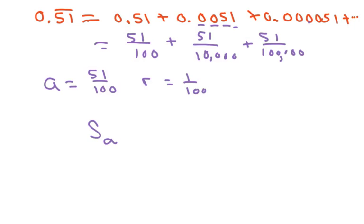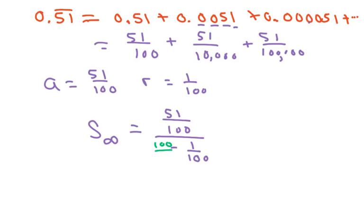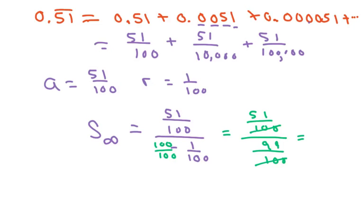Using the infinite geometric series summation formula, we get 51 over 100, divided by 1 minus 1 over 100. I change the 1 to 100 over 100, giving us 51 over 100 divided by 99 over 100. These two hundreds cancel, so my answer is 51 over 99.